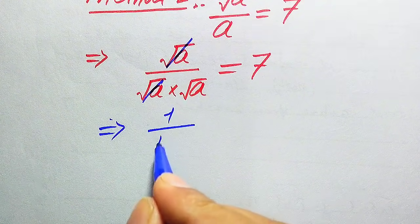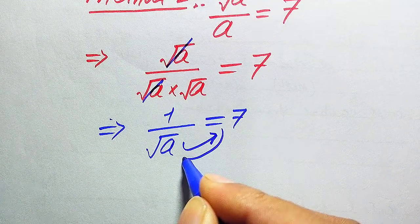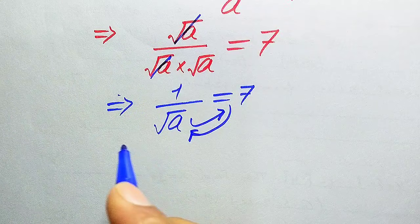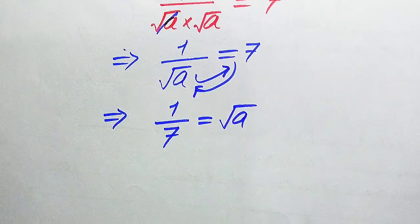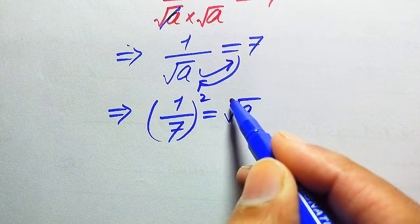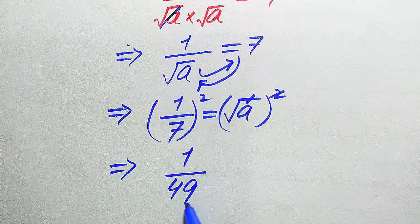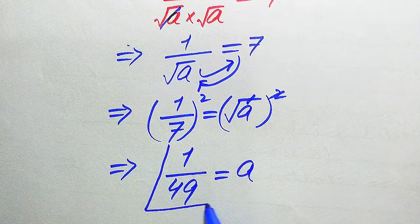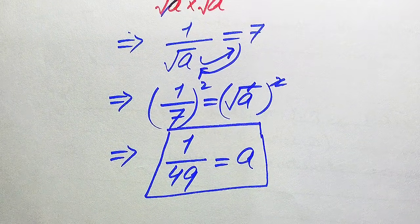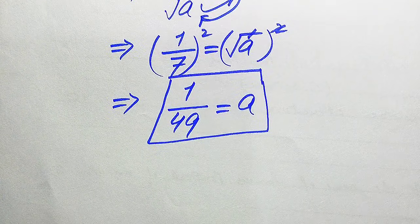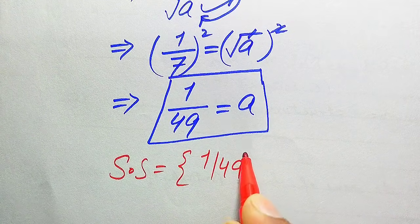After cancellation we get 1 divided by square root of a equals 7. We move square root of a to the right-hand side and 7 to the left-hand side: 1 over 7 equals square root of a. To find a, we apply squaring on both sides — the square and square root cancel — giving 1 squared over 7 squared, so a equals 1 over 49. We already verified in Method 1 that this satisfies the equation, so the solution set is {1/49}.